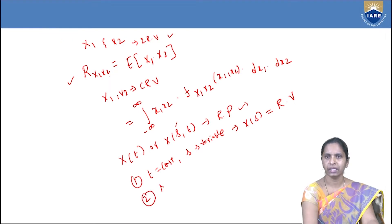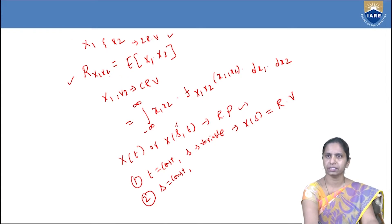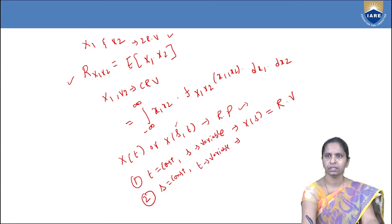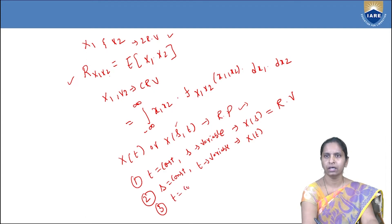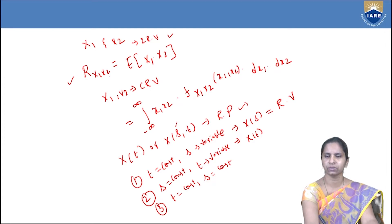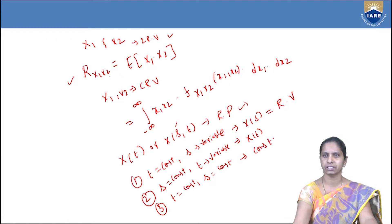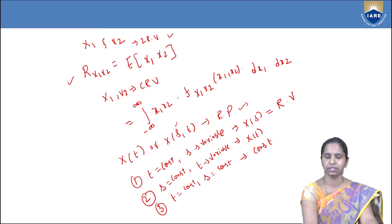The second case: if the sample space elements or the outcome of the experiments are constant, then the random process will not vary with respect to s; it will vary with respect to only the variable t. The third case: if both time and the outcome of the experiments are constant, the random process is not varying with respect to either, so it becomes a constant value.